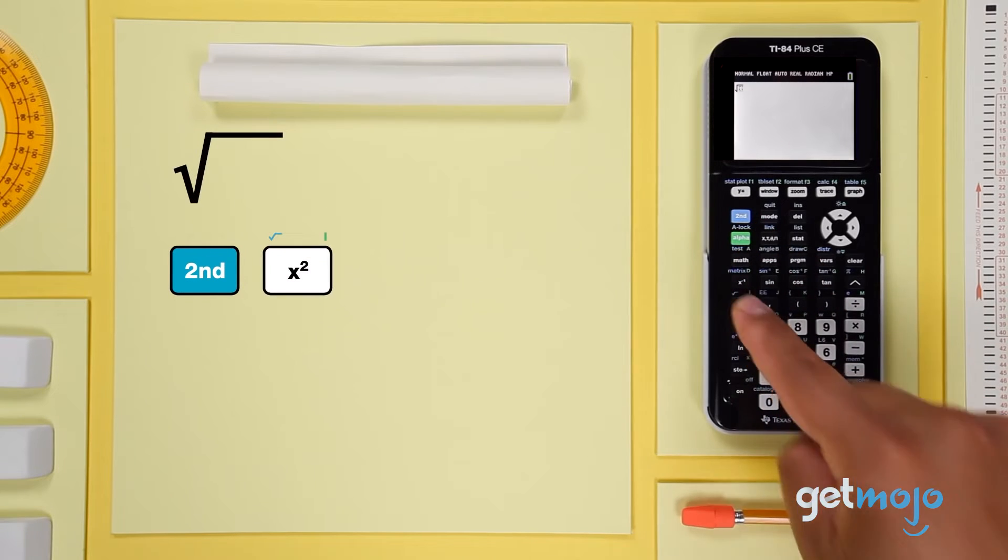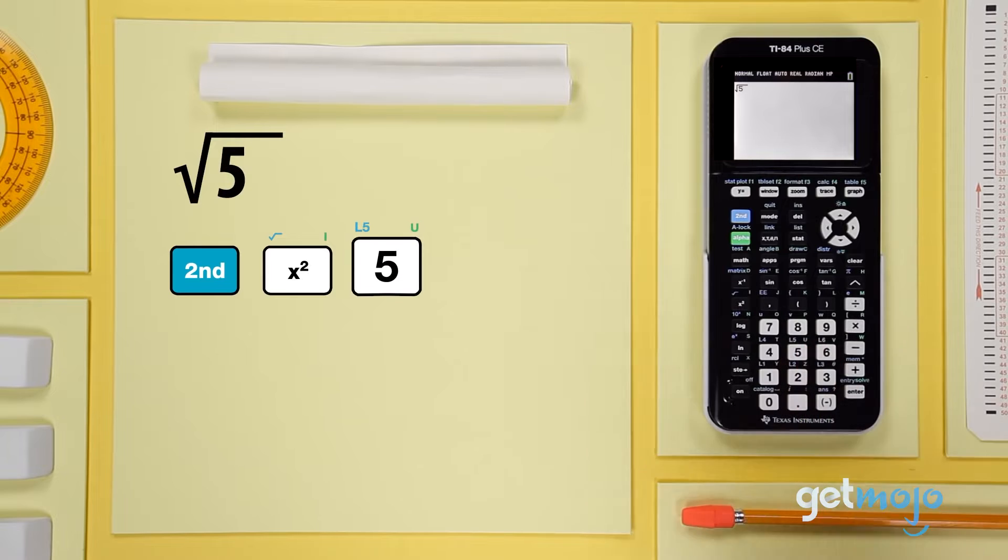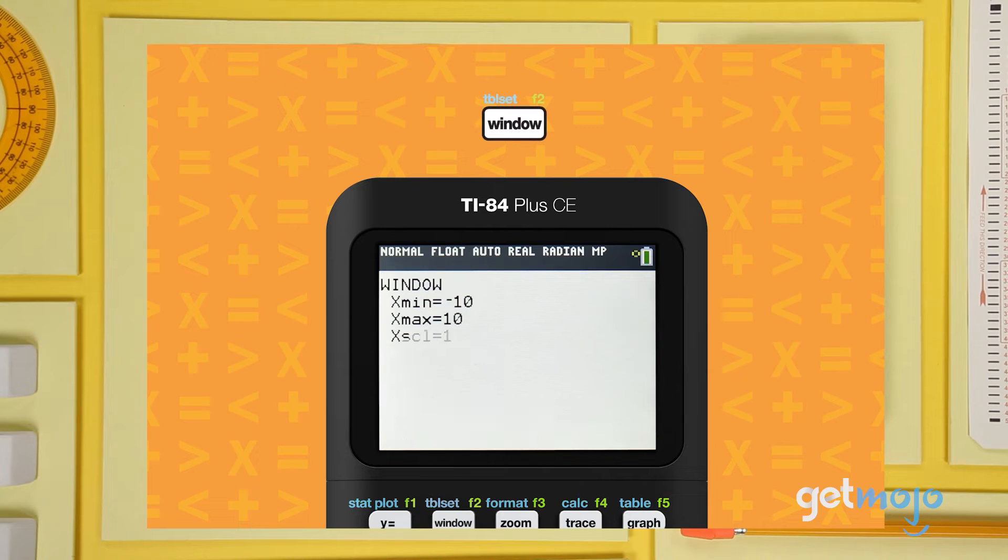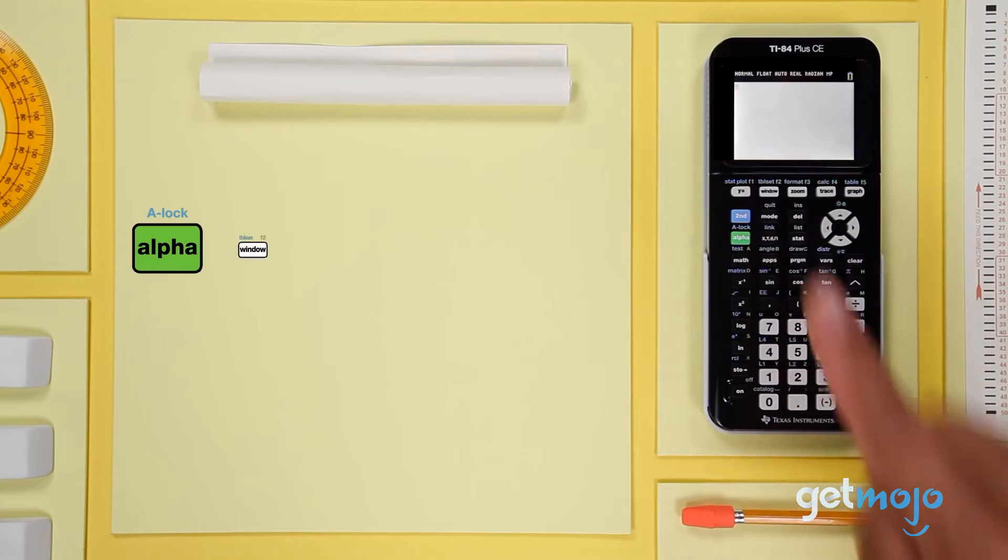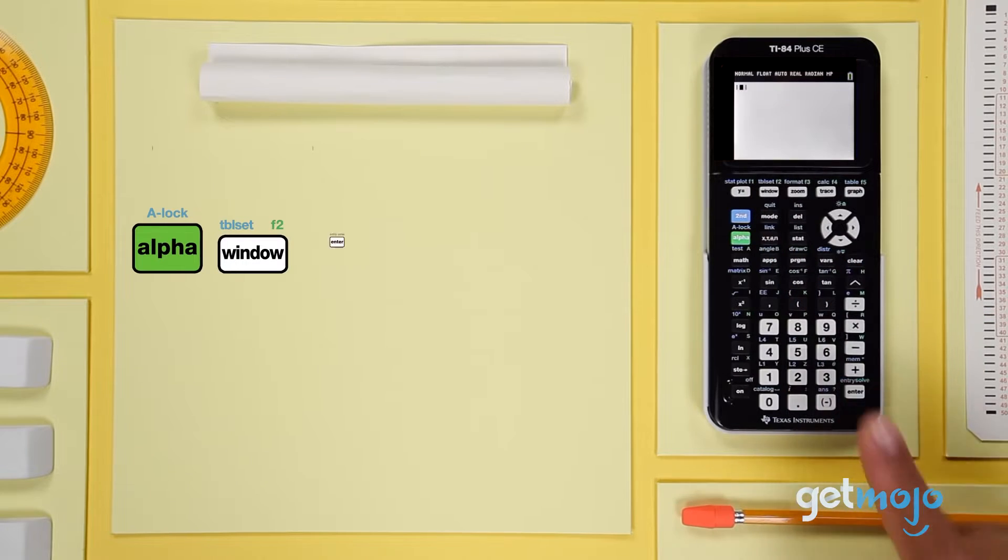To further simplify the process, it boasts a unique color-coding feature which differentiates equations, plots, and objects using various colors, so it's easier than ever to distinguish between multiple graphs and data plots.